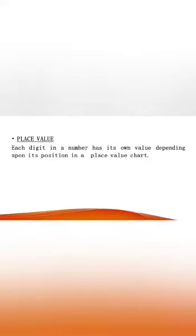Before that, we will have a look at what is a place value. A place value is, each digit in a number has its own value depending upon its position in a place value chart. For example,